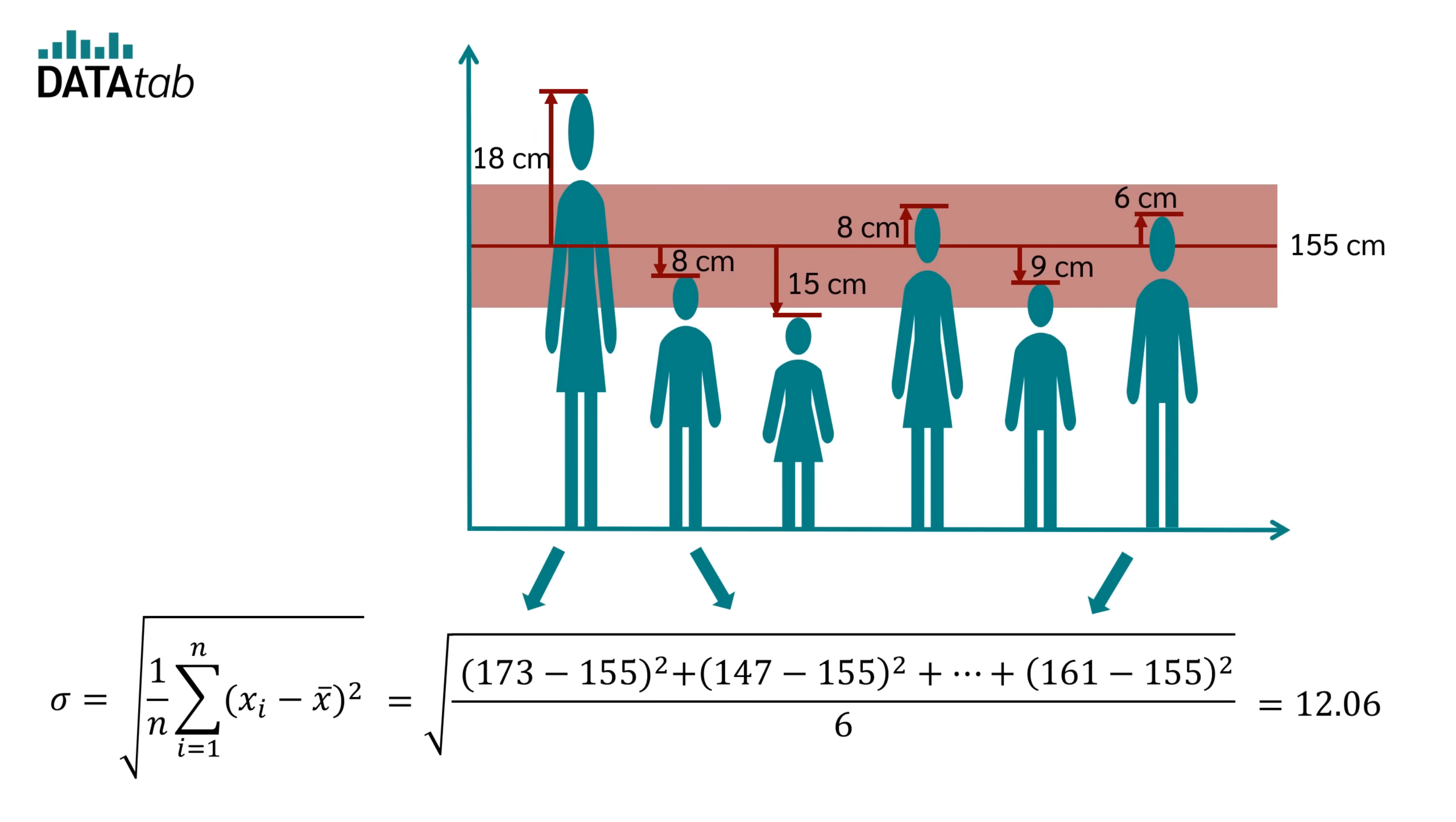The result is then 12.06 cm. So each individual person has some deviation from the mean, but on average, the people deviate 12.06 cm from the mean, which is now our standard deviation.